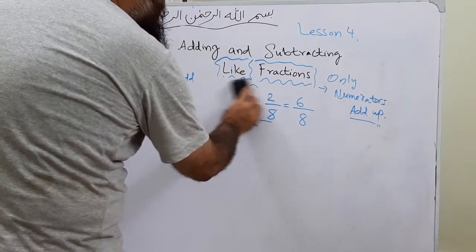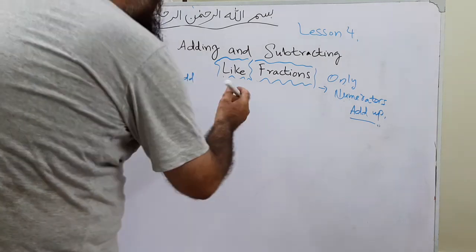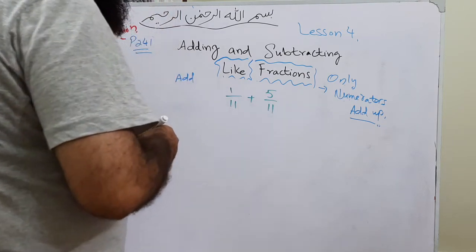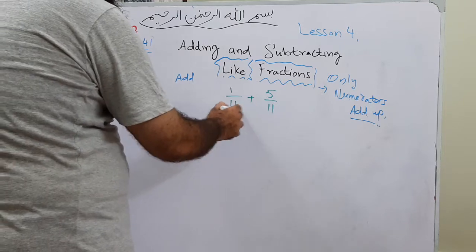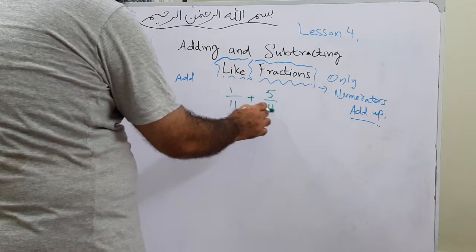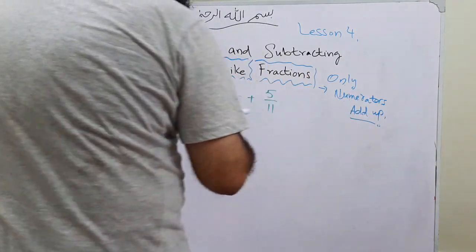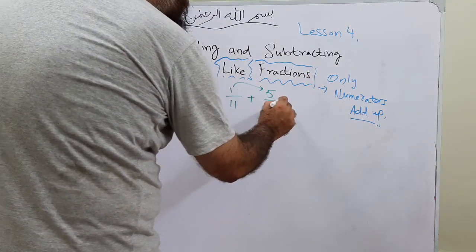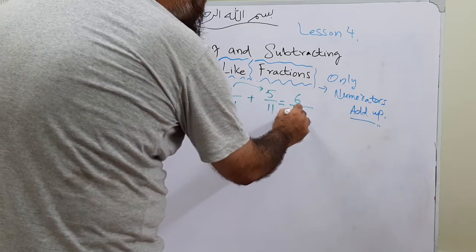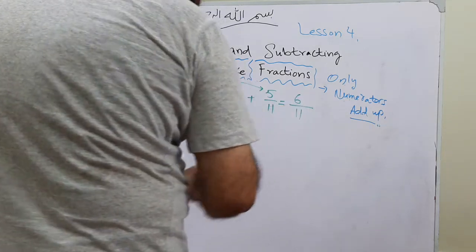Now part d: 1 over 11 plus 5 over 11. The denominators are both 11, so this is addition of like fractions. Only the numerators add up — 1 plus 5 is 6, and the denominator comes one time. So 6 over 11. When we add 1 over 11 and 5 over 11, we get the answer 6 over 11.